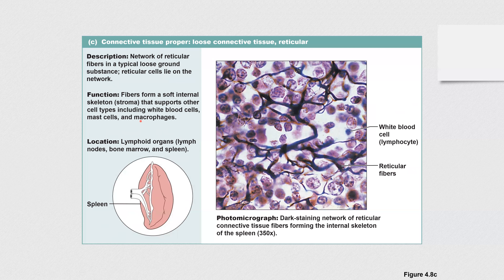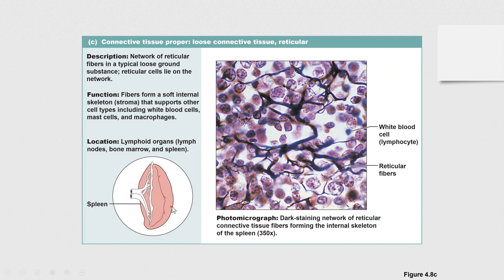Reticular connective tissue has a network of reticular fibers that are predominant, with a typical loose ground substance. Reticular cells lie on the network and secrete those reticular fibers, and there is also a large amount of white blood cells in this tissue. Function: fibers form a soft internal skeleton or stroma that supports other cell types, including white blood cells, mast cells, and macrophages. This tissue is located in lymphoid organs such as lymph nodes, bone marrow, and spleen — it serves as a framework for lymphoid tissue.